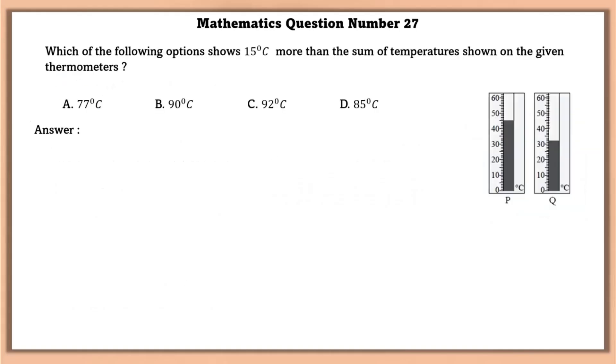Mathematics question number 27. Which of the following options shows 15 degree Celsius more than the sum of temperatures shown on the thermometers? Sum of temperatures shown here is equal to 77 degree Celsius. So 15 degree more than this is equal to 92 degree Celsius.